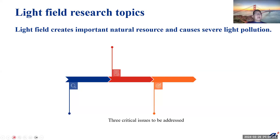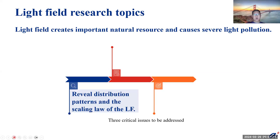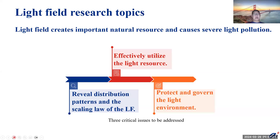We find that the light field can create important natural resources and also cause severe light pollution. This motivates us to raise three questions: What is the spatial temporal distribution, patterns, and even the scaling law of the light field? How can we effectively utilize the light resource? And how can we protect and govern the light environment, such as mitigation of light pollution?